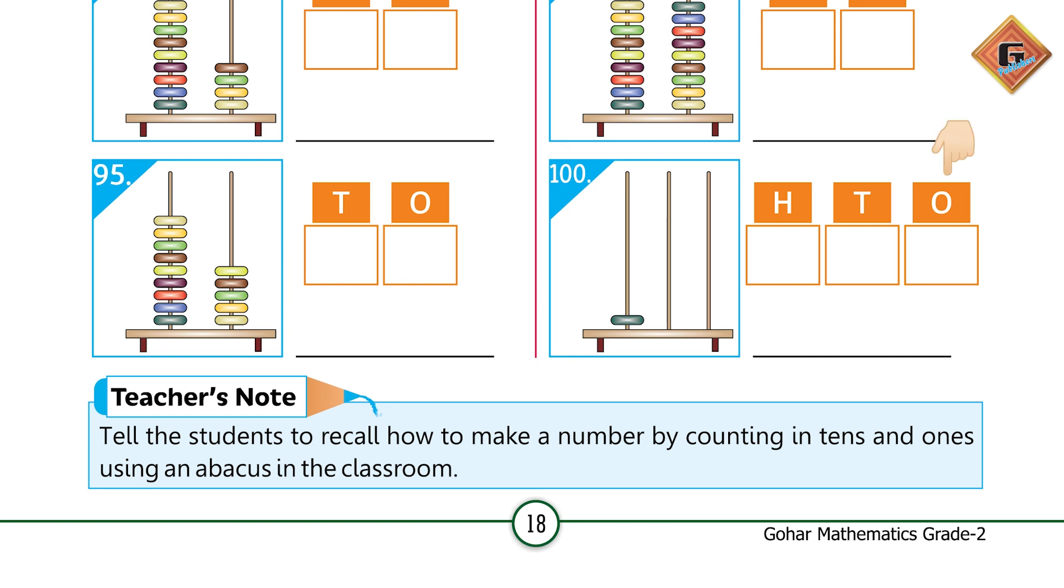After 99, look at the abacus with three rods. The first rod is for ones and that is empty. The tens rod is also empty. The third rod has one bead, and this third rod is for hundreds. It means that up to 99 you had two-digit numbers, now 100 has three digits.